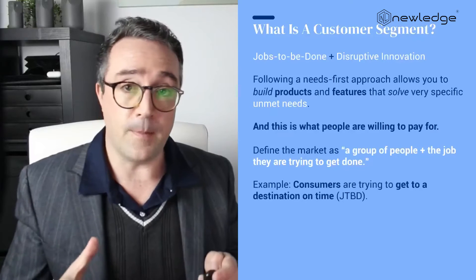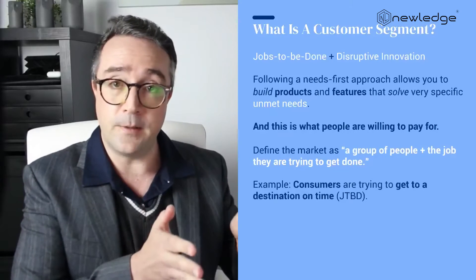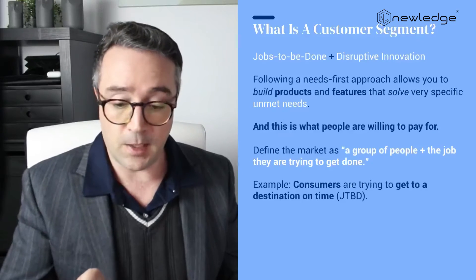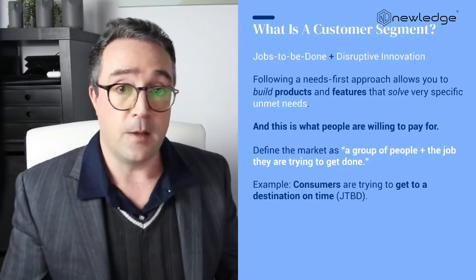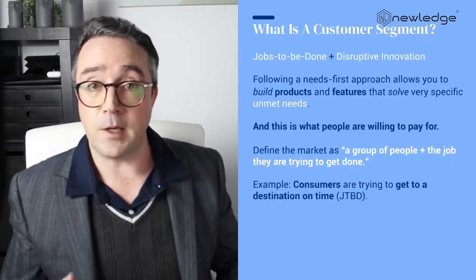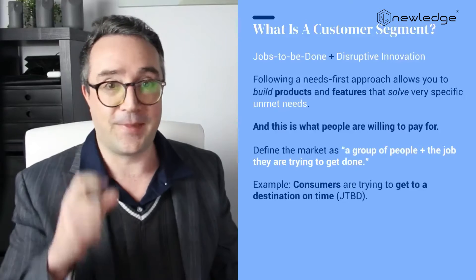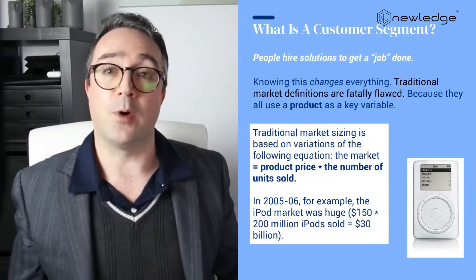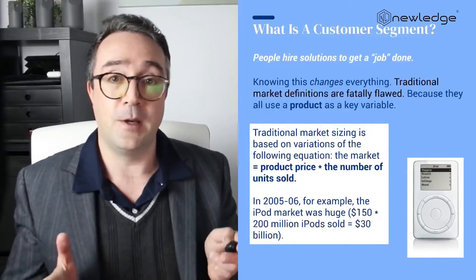When applying Jobs-to-be-Done, your first step involves defining the market as a group of people plus the job they're trying to get done. For example: consumers are trying to get to a destination on time; teachers are trying to pass on their lessons; managers are trying to help their business; STEM grads are looking to get higher-paying jobs in purpose-driven companies. A job or problem statement embodies what the customer is ultimately trying to accomplish.